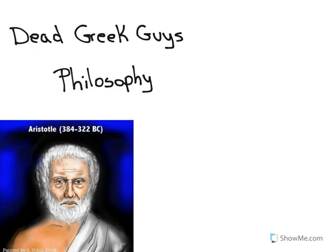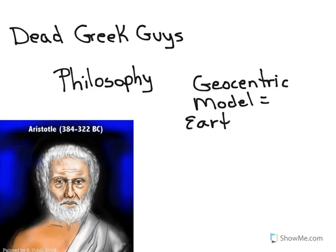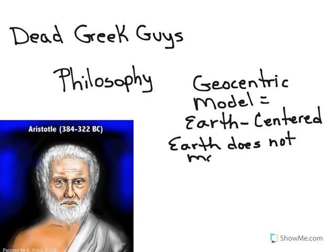One of the first things that Aristotle did was formalized what we now call the geocentric model, and the word geocentric means Earth-centered. The idea was that Earth would be the center of the universe, and the Earth does not move. And how did Aristotle come to this conclusion? Well obviously we don't feel like we are moving, therefore we must not be moving.